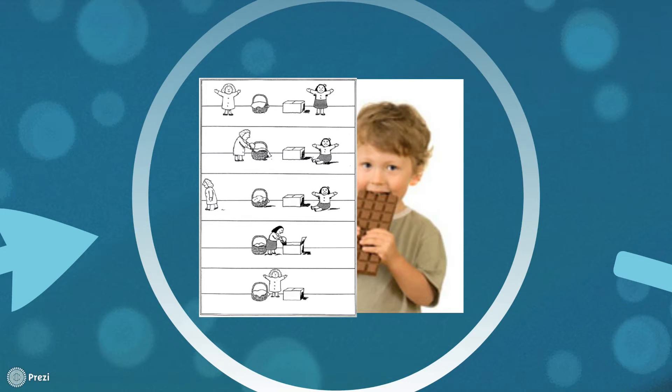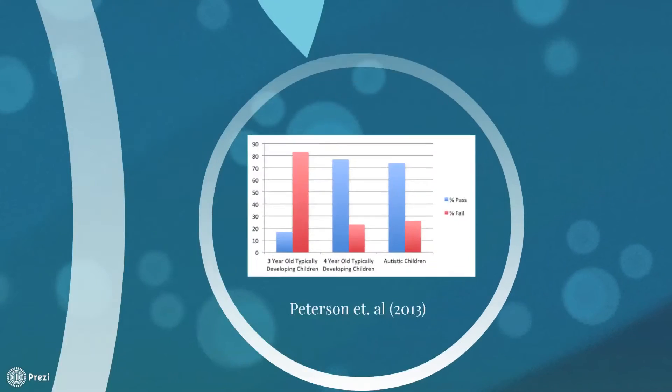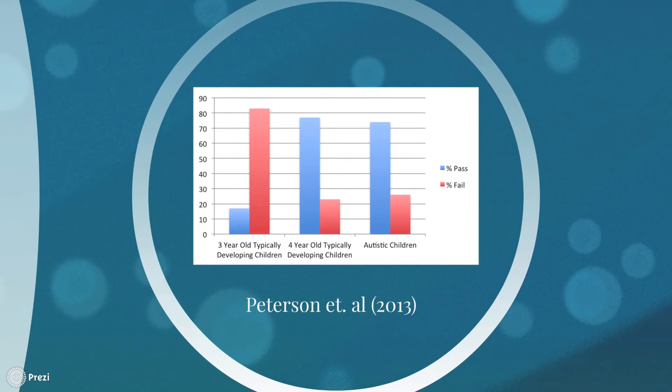This shows that the child must understand that the doll has a false belief about the location in order for them to answer correctly and be rewarded with the candy. 74% of children with autism passed this trial. Such a significant increase in the number of passing autistic participants shows that they were able to correctly attribute false beliefs to a doll. Peterson and colleagues changed the framework of this test of theory of mind and found noticeably different results from Baron Cohen.